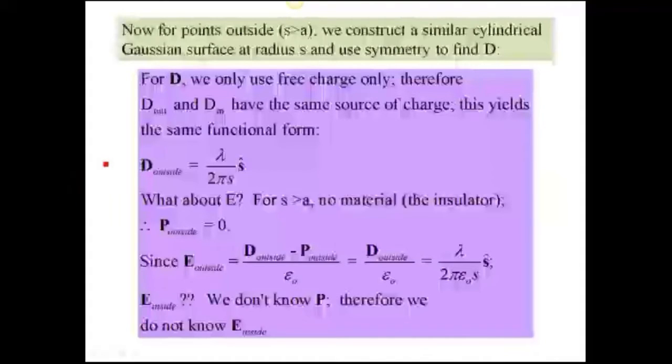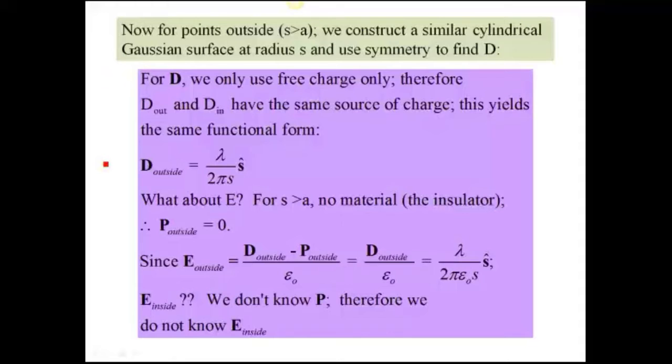Now let's look at the points outside. So S is greater than A. Again, we make a Gaussian surface at radius S outside of the dielectric, and we use symmetry to find D. Remember for D, we only use the free charge. Therefore, if you look at it, D out and D in are going to have the same source of charge, which is the lambda on that wire that goes down the middle. So as a result, when you take that into account and evaluate Gauss's law, you end up with exactly the same function for the D field. That's because D only depends on free charge, and we have this symmetry that's easy to get the integral.